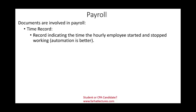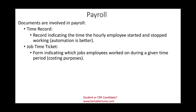In the payroll cycle, key documents include time records — tracking when an employee starts and ends work. Automation is better here; most companies now use ID card scanning. There are also job timesheets for internal job costing purposes — for example, in a manufacturing company tracking time spent on Product A versus Product B, so we know the cost to produce each product.